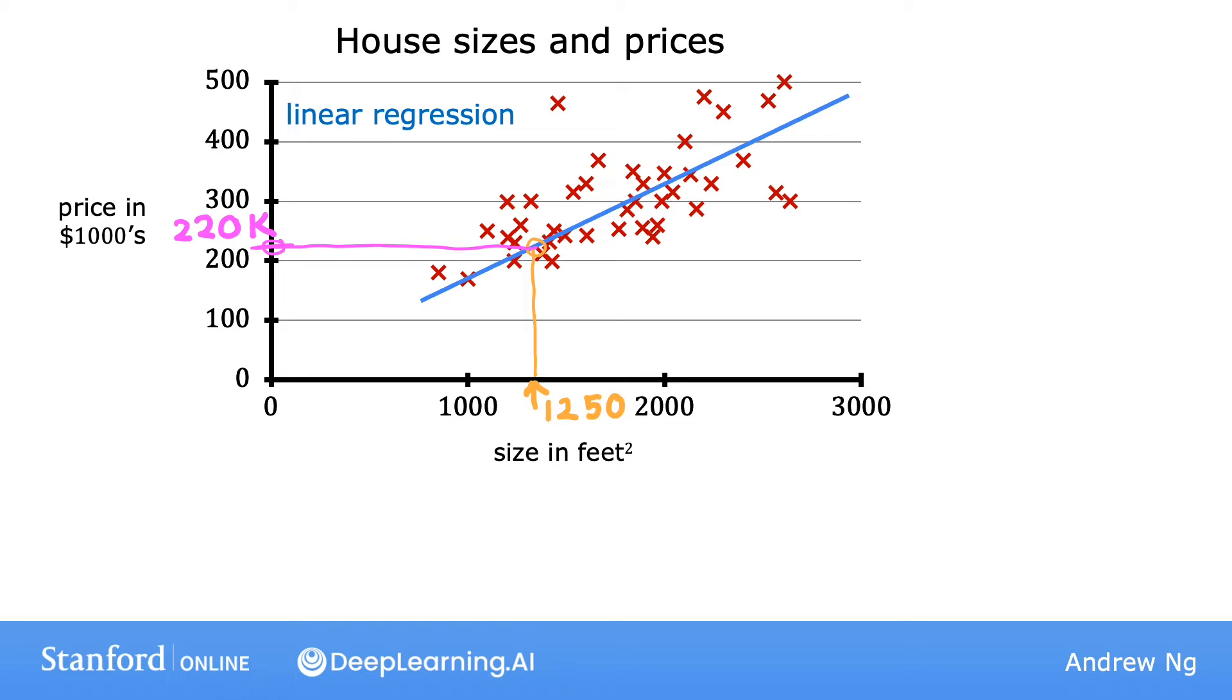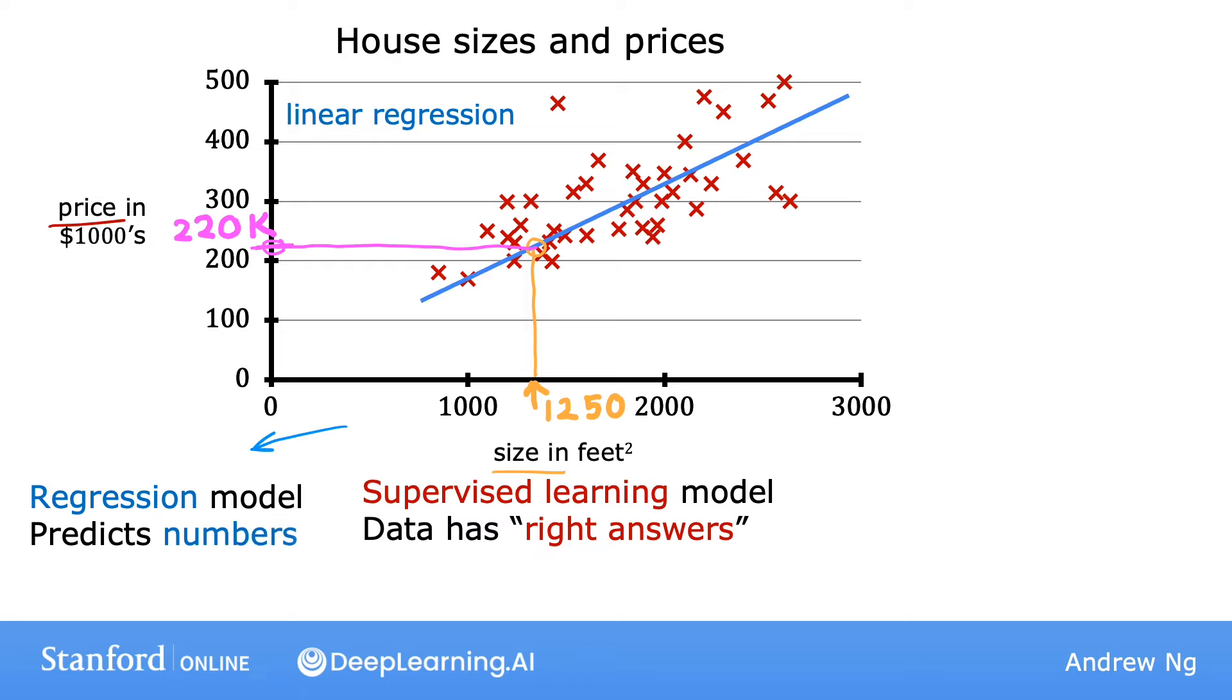So this is an example of what's called a supervised learning model. We call this supervised learning because you are first training your model by giving it data that has the right answers. Because you give the model examples of houses with both the size of the house, as well as the price that the model should predict for each house. Where here, the prices, that is the right answers, are given for every house in the dataset. This linear regression model is a particular type of supervised learning model. It's called a regression model because it predicts numbers as the output, like prices in dollars. Any supervised learning model that predicts a number such as 220,000 or 1.5 or negative 33.2 is addressing what's called a regression problem. So linear regression is one example of a regression model, but there are other models for addressing regression problems too. And we'll see some of those later in course two of this specialization.